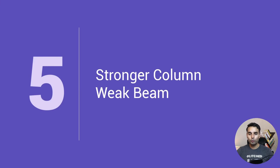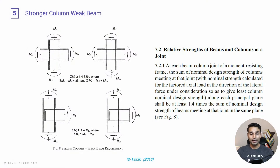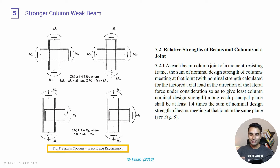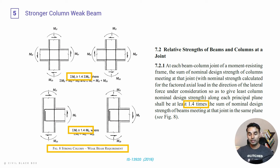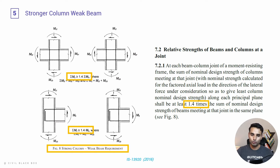Concept number five is all about having stronger columns and weak beams. This logic comes from IS 13920 (2016 version), which talks about the strong column and weak beam requirement. As per IS 13920, the moments for the columns are taken as 1.4 times the value of the beams. This gives the structural designer the ability to by default design a stronger column, essentially over-designing columns relative to beams.